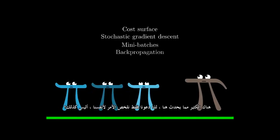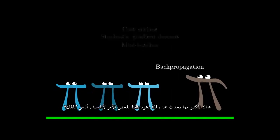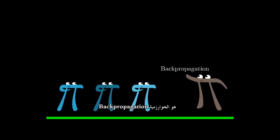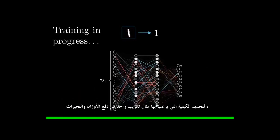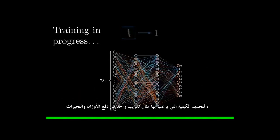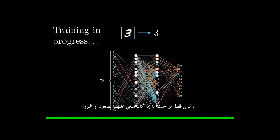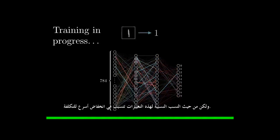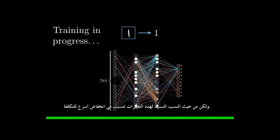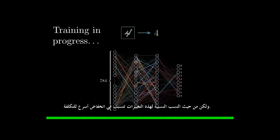There's kind of a lot going on here, so let's just sum it up for ourselves, shall we? Backpropagation is the algorithm for determining how a single training example would like to nudge the weights and biases, not just in terms of whether they should go up or down, but in terms of what relative proportions to those changes cause the most rapid decrease to the cost.